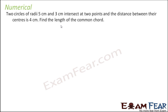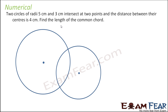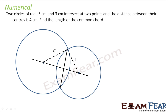Two circles of radius 5 and 3 cm intersect at two points. The distance between their centers is 4 cm. So this distance is 4 cm, and the radii are 3 and 5. Let's draw this. Let the centers be O and O-dash, so O to O-dash is 4 cm. We have to find the length of the common chord.